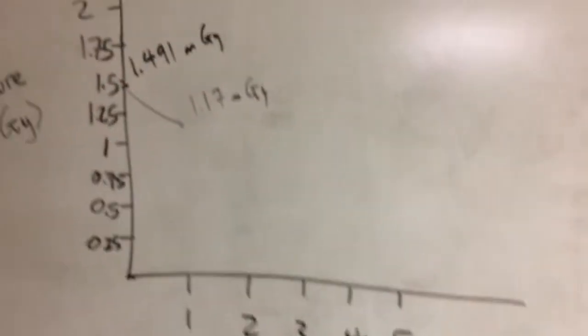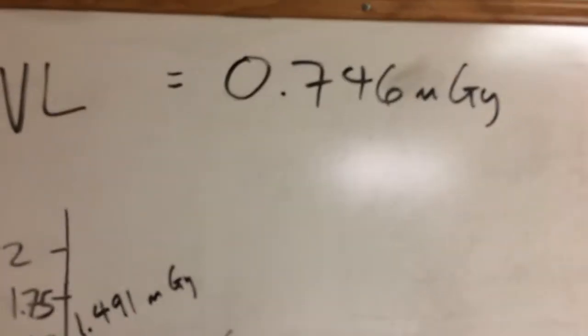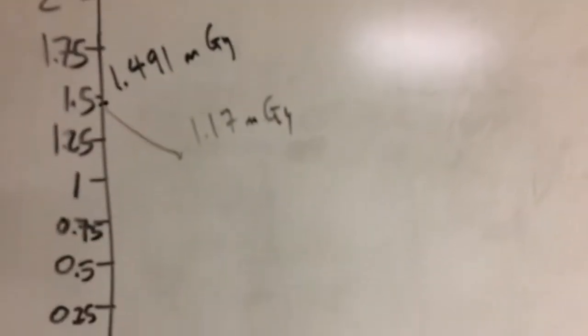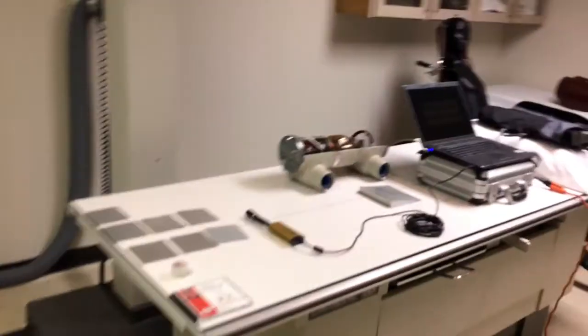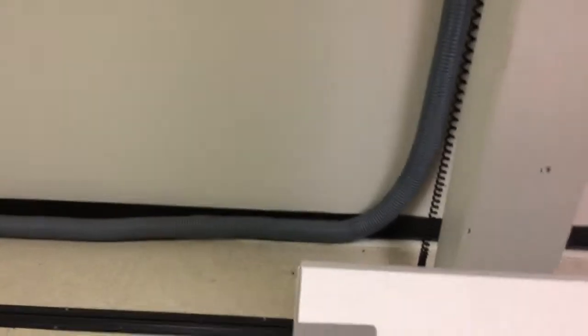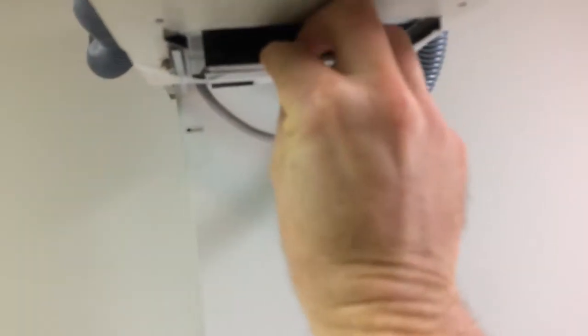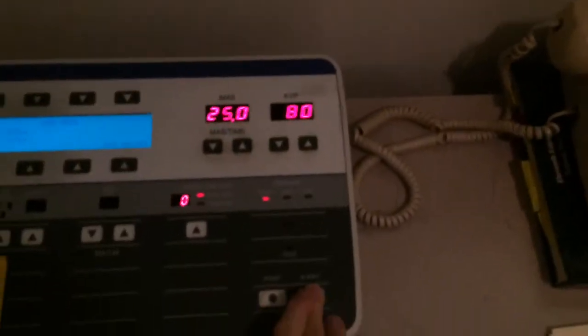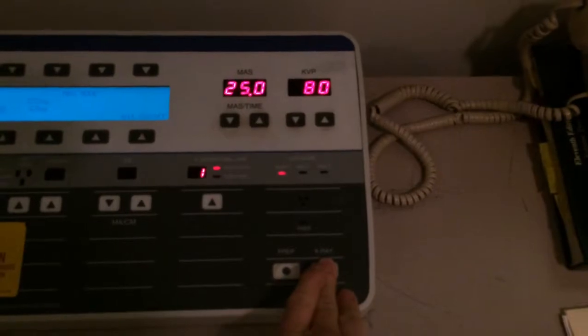Let's go ahead and add some more aluminum because we're trying to get to that number there. Then we'll know we're at the half-value layer. I'm going to grab one of these millimeters here, slide it in, and we'll make another exposure. Now this might seem like about as interesting as watching paint dry, but you'll see where this starts to get interesting.